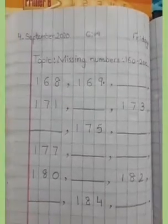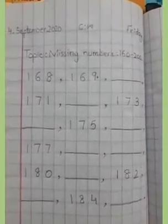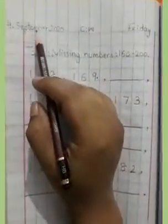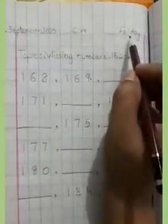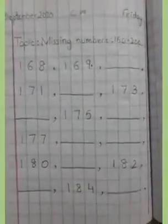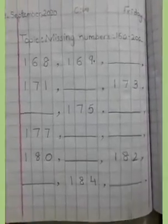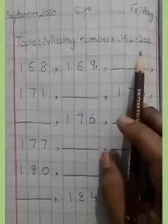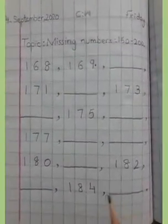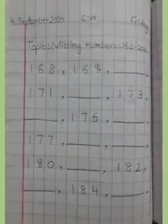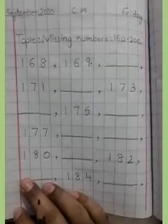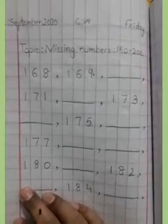For math written work today we have missing numbers from 160 to 200. The date is 4th September 2020, Friday. We have done forward counting previously. Today I have written counting from 168 to 185, and left some dashes so students can write the answers.